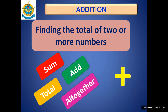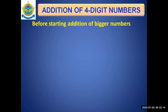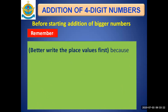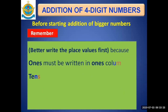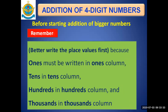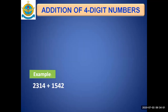Before starting addition of bigger numbers, remember that it's better to write the place values at the top of the digits first, because ones must be written in the ones column, tens in the tens column, hundreds in the hundreds column, and thousands in the thousands column. When numbers are written vertically according to their columns, it is easy to add them correctly.